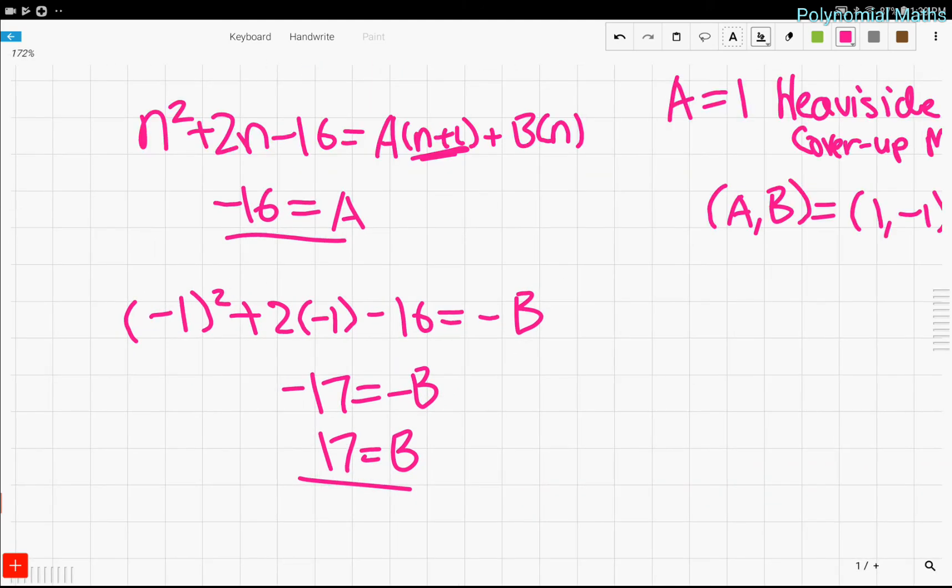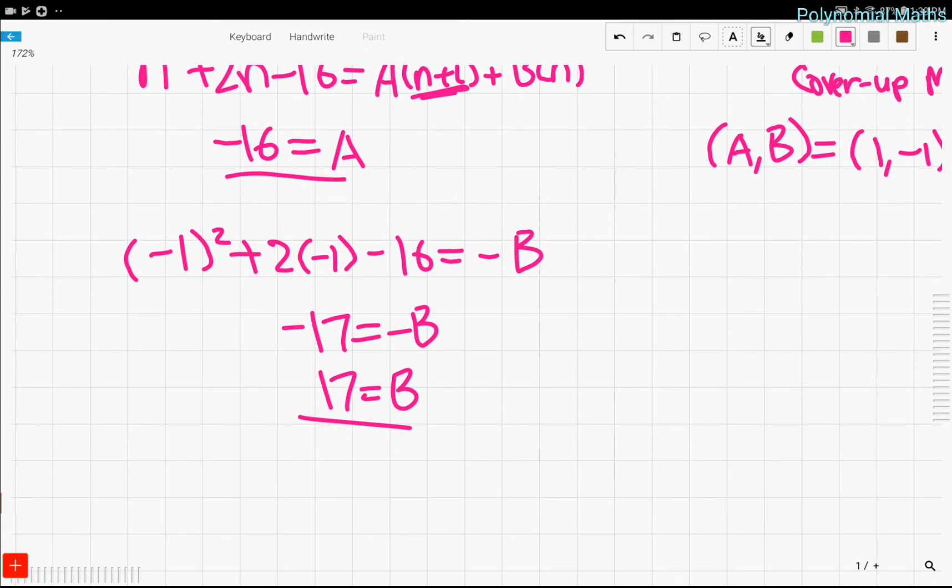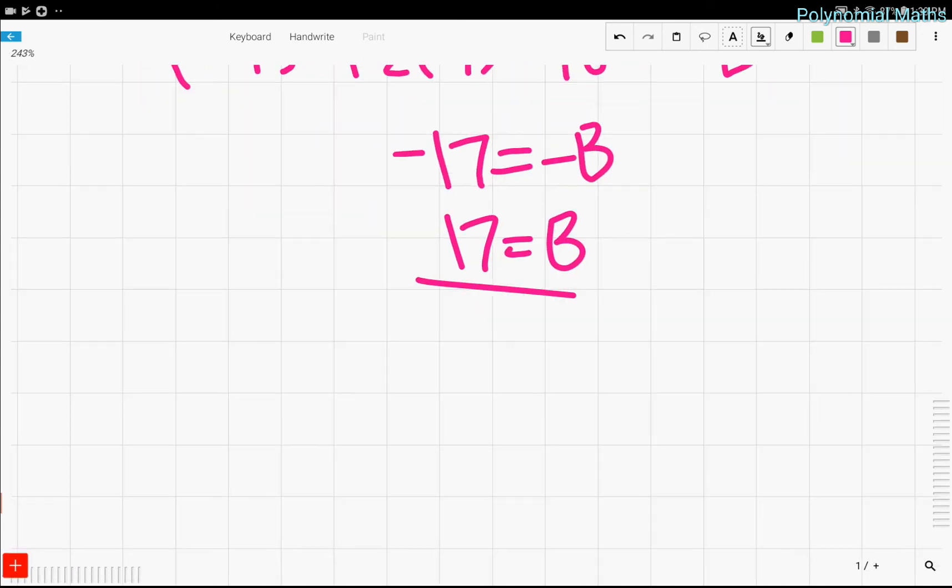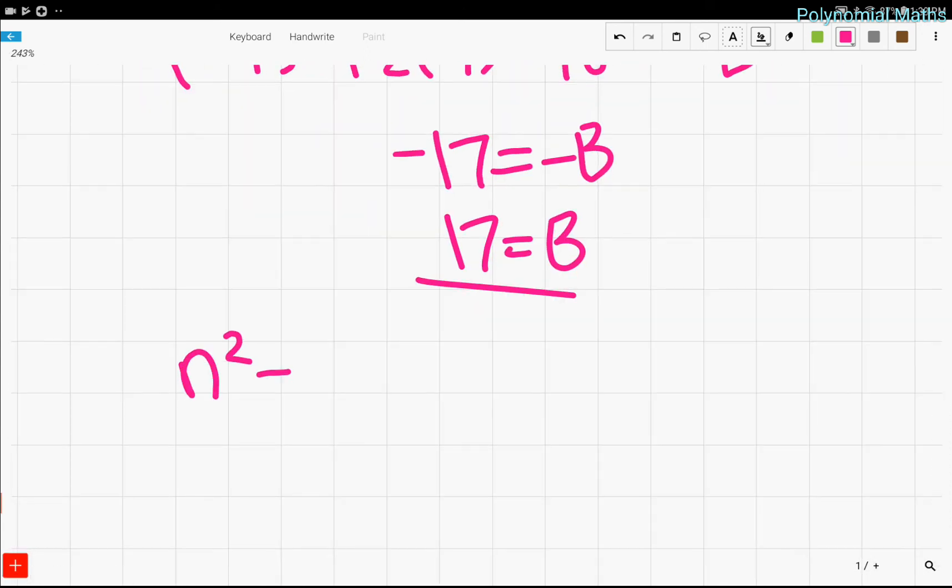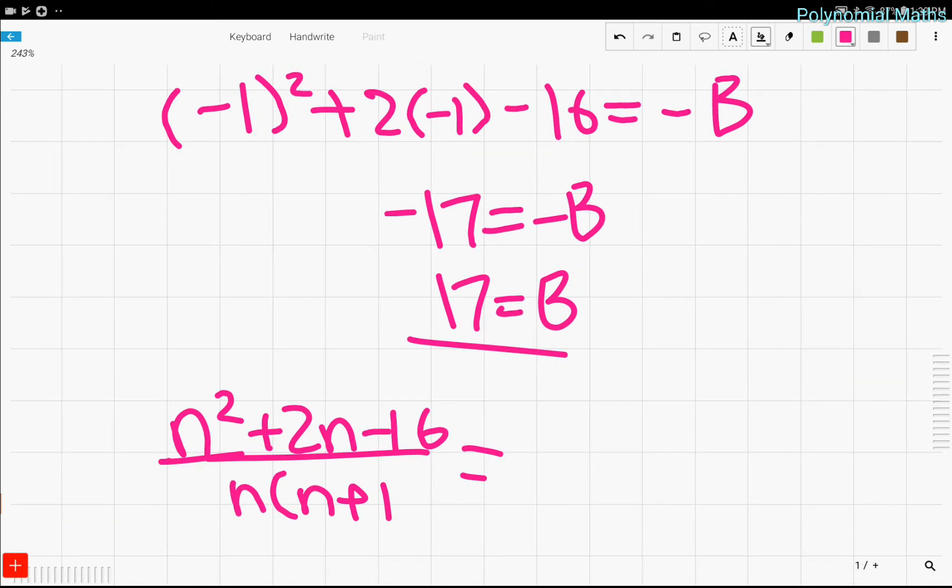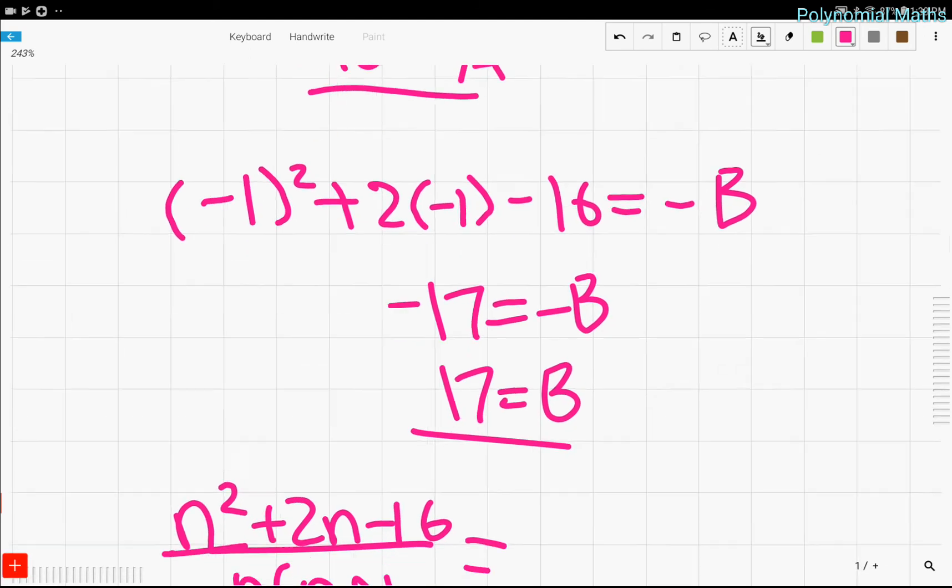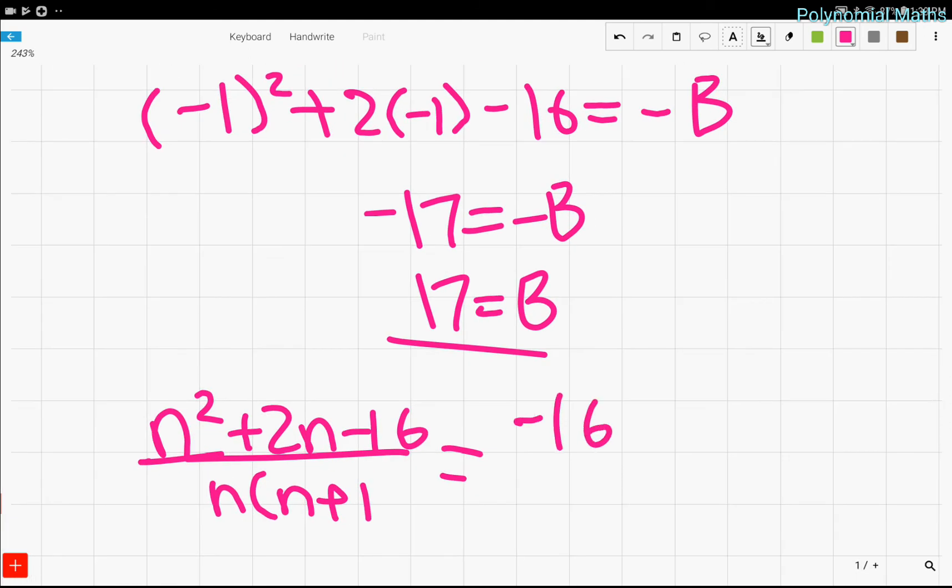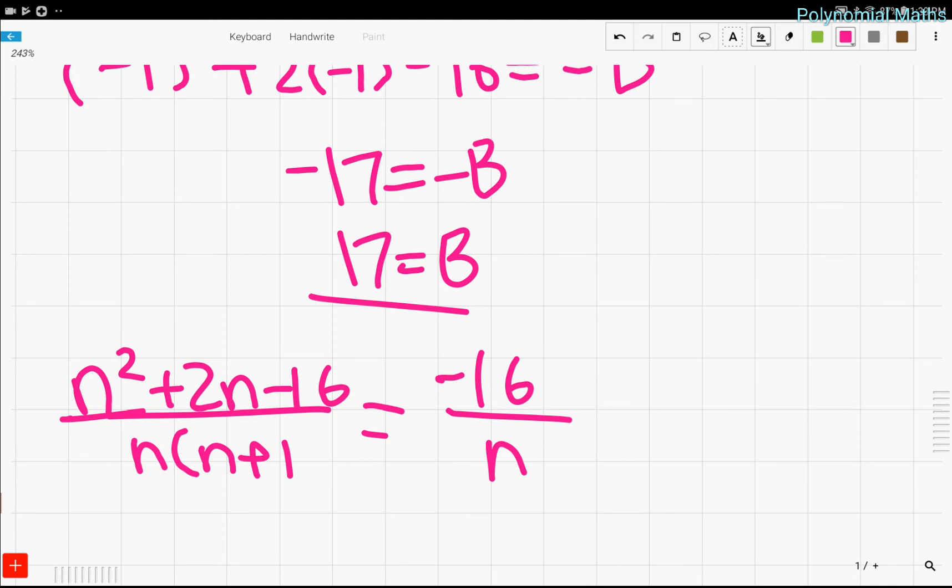So, that's our second solution. So, the ordered pair for that one, the one that we just did earlier, n squared plus 2n minus 16 over n times (n plus 1) is just equal to negative 16 over n plus 17 over (n plus 1). That's pretty neat, right?